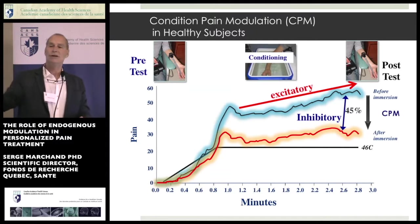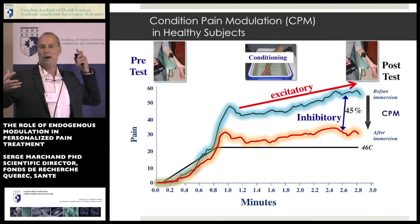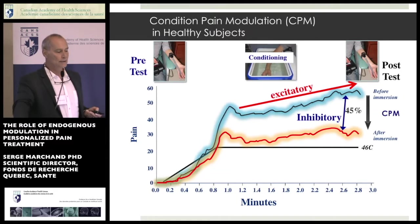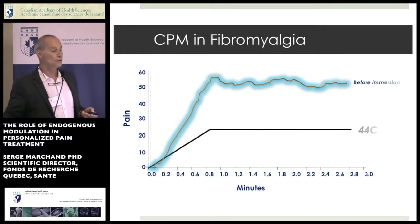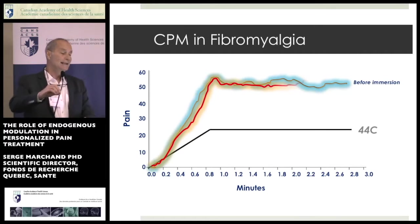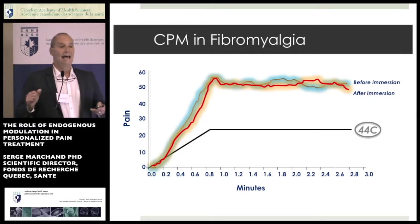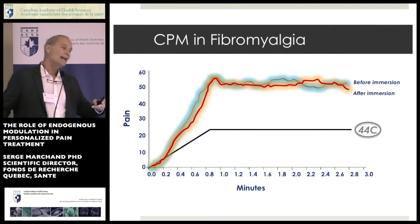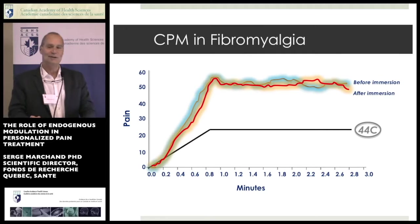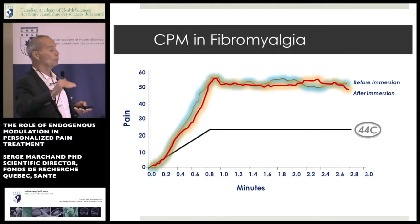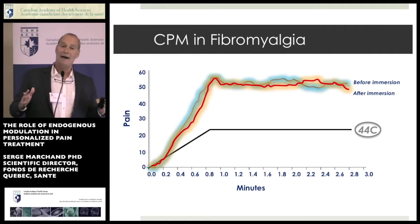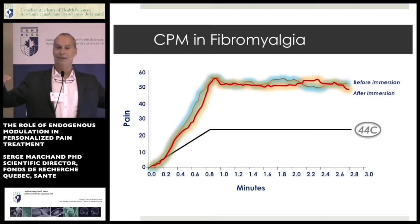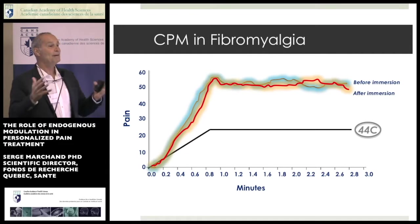Let's take one group I studied years ago: fibromyalgia. Because they had large pain over their body, it seems the inhibitory system is not working well. Before they put their hand in cold water versus after — the mean tells us they have a strong deficit. But trust me, when we show each subject individually, almost half of them have a really good inhibitory system, and the other half have an increase of pain. When you make the mean, you see something like zero — but it's not zero, it's because they're different.